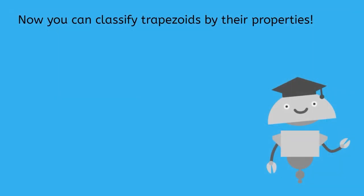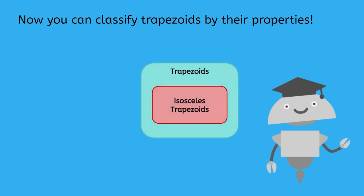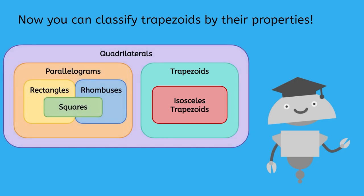Now you can classify trapezoids by their properties. Always make sure that you're checking how many pairs of sides are parallel. After all, having only one pair of parallel sides is what separates trapezoids from parallelograms. See you next time!